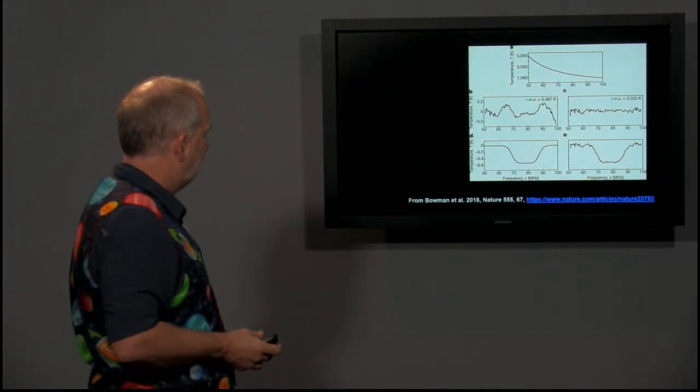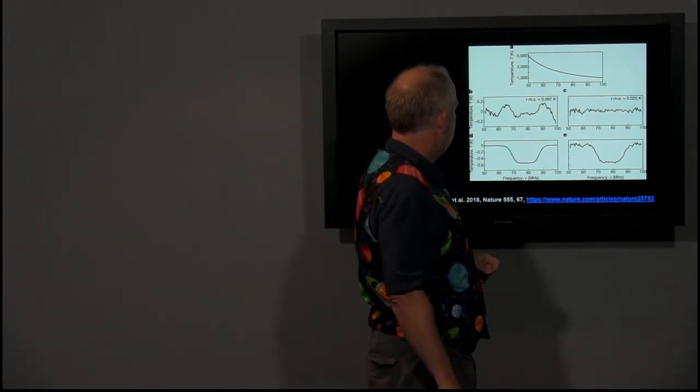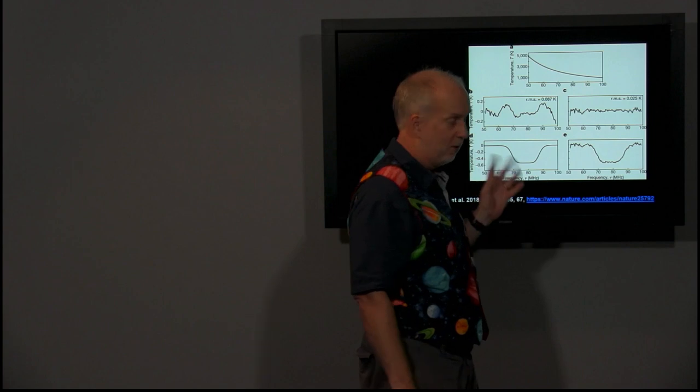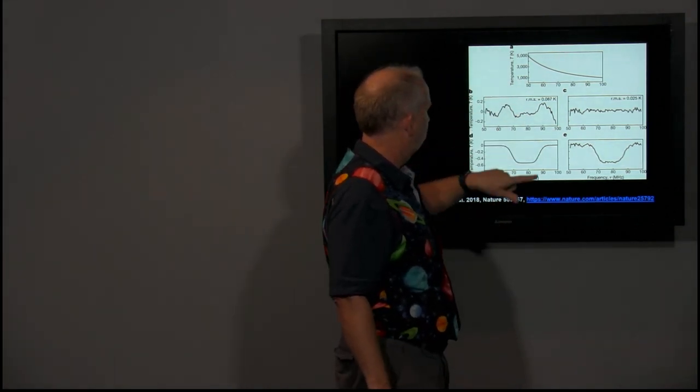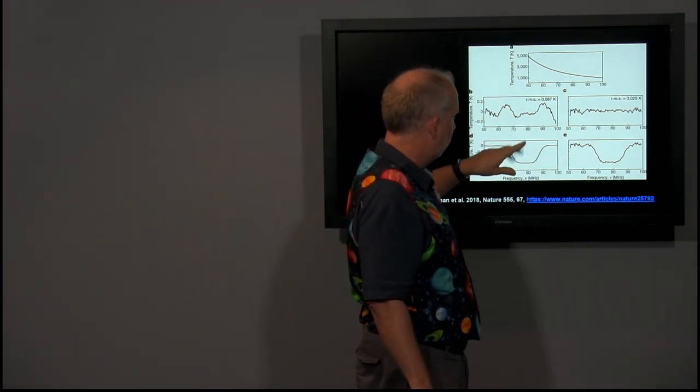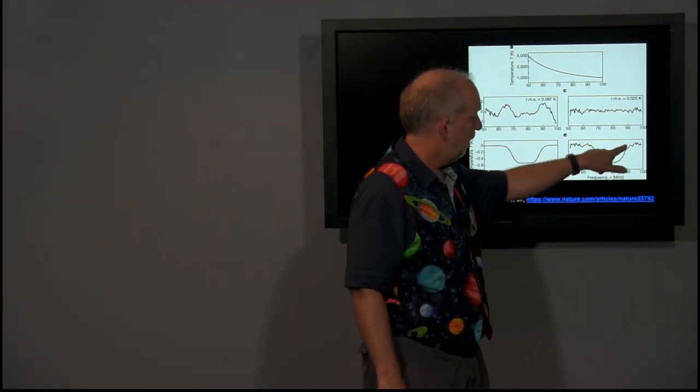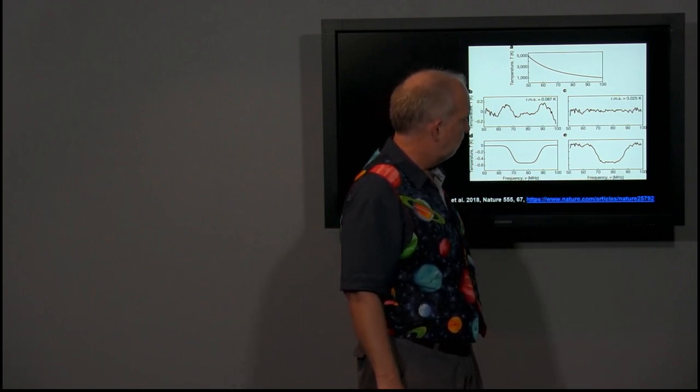And here's what they get. Here's the raw data, which is totally dominated by the foregrounds of emission from our own galaxy. Then you subtract that off and you get this. And you subtract more things off from careful modelling to get rid of all the foregrounds and you apparently get a dip that looks like this, between 70 and 85 megahertz.